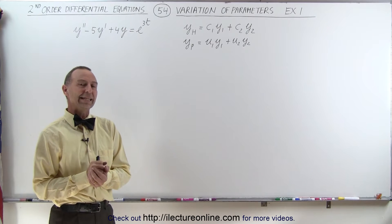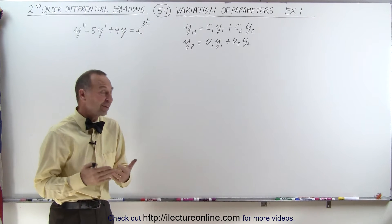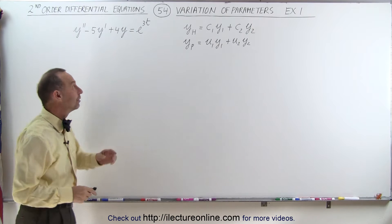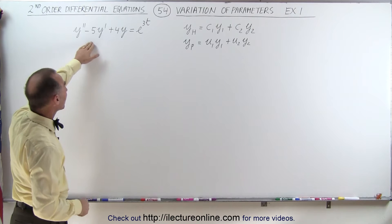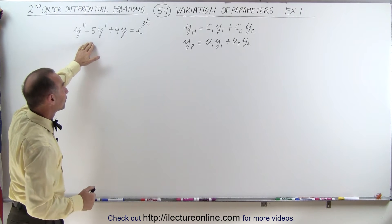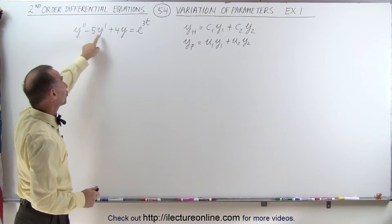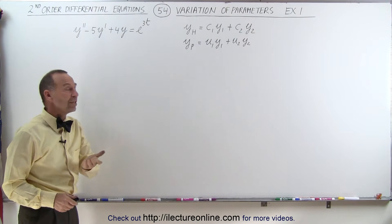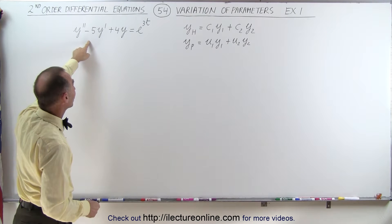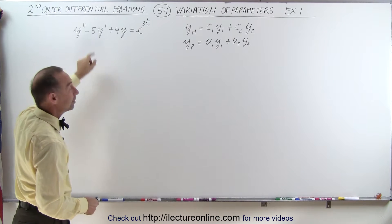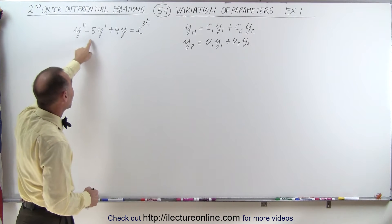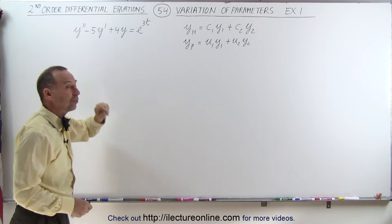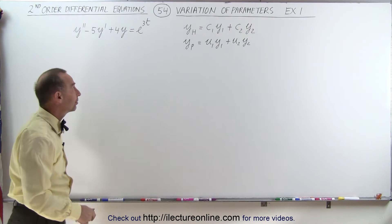Welcome to ElectronLine. Here's our first example of how to use the Variation of Parameters method to solve the non-homogeneous differential equation. Notice that we are starting with an equation we've seen before — we used the method of undetermined coefficients to solve this equation. Also notice we're starting with a relatively easy one where the coefficients are constants rather than functions of the variable t.